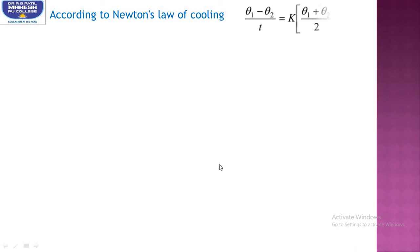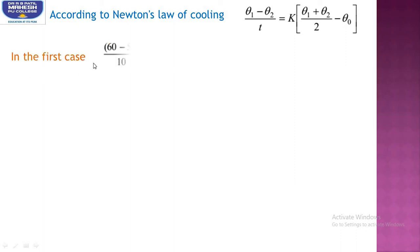According to Newton's law of cooling, we write the formula as (θ₁ − θ₂)/t = k·[(θ₁ + θ₂)/2 − θ_surrounding]. In the first case, the temperature went from 60 to 50°C. The surrounding temperature is θ₀. To come from 60 to 50, it took 10 minutes. The mean temperature on the right-hand side is (60 + 50)/2.